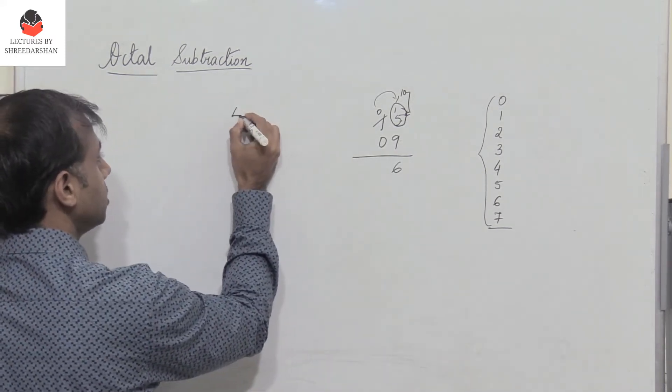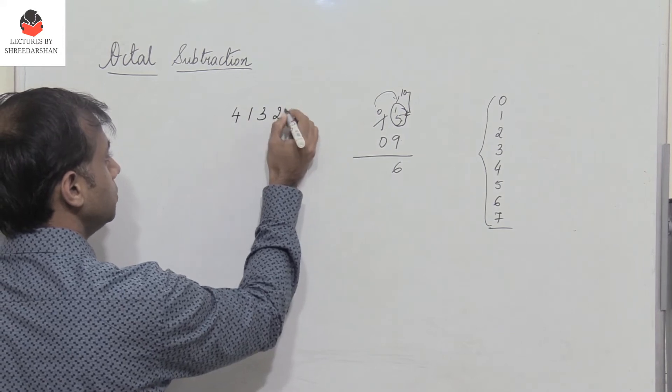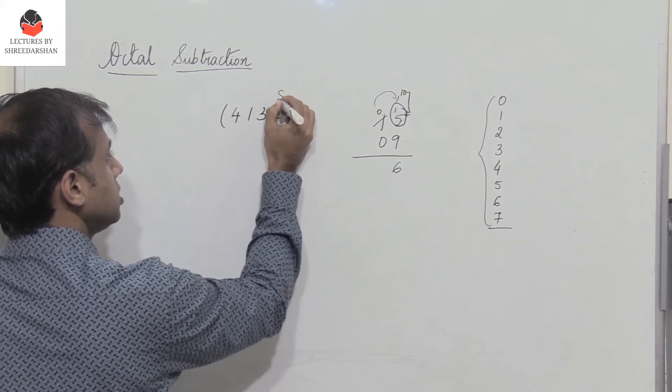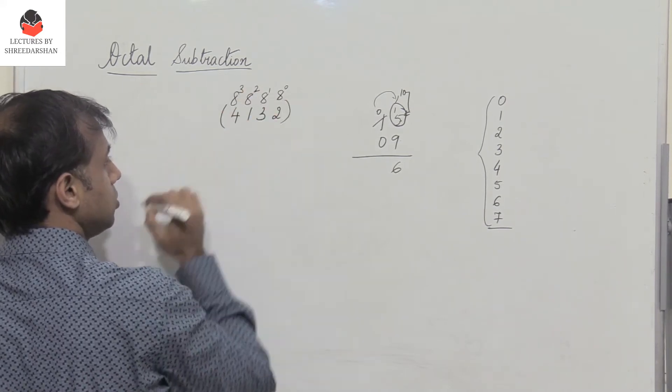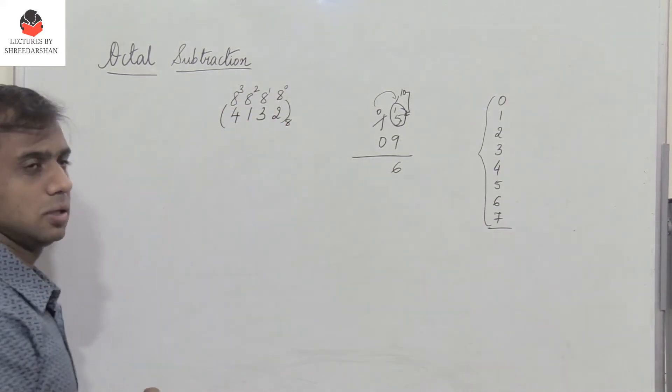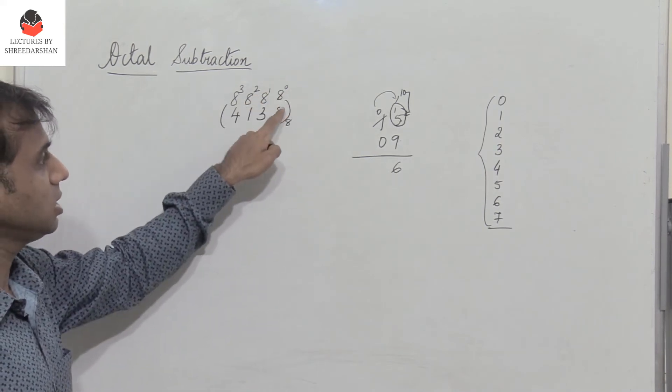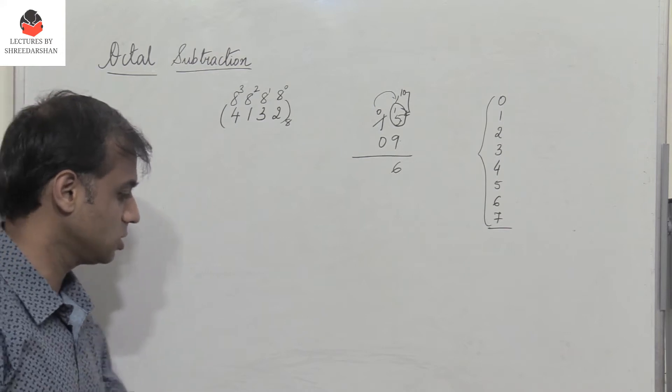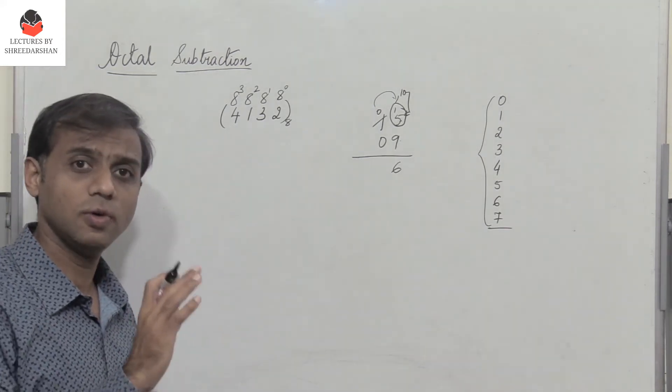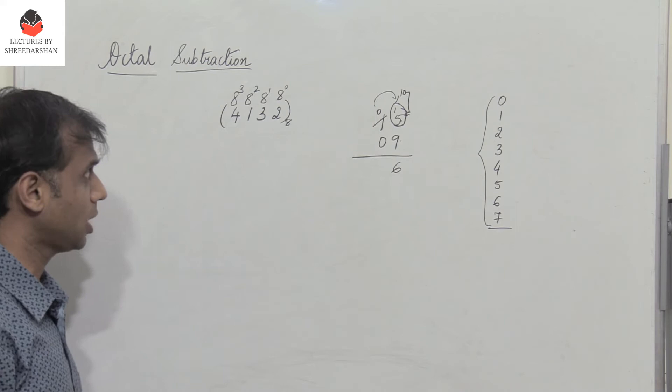So suppose I have an octal number 4, 1, 3, 2. So this has a weight 8 power 0, 8 power 1, 8 power 2 and 8 power 3. So when I take a borrow from the previous stage, I have to add 8 to the given number. So let us see how we can perform subtraction here. So this is how we need to be careful while performing octal subtraction.